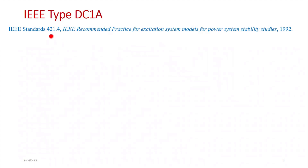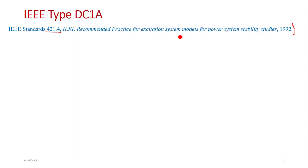We'll consider the IEEE Type DC1 exciter. The IEEE standard 421.4 covers excitation system models. This standard, published in 1992, is the recommended practice for excitation system models for power system stability studies. There are various models defined in this standard; we'll talk about only the DC exciter here.